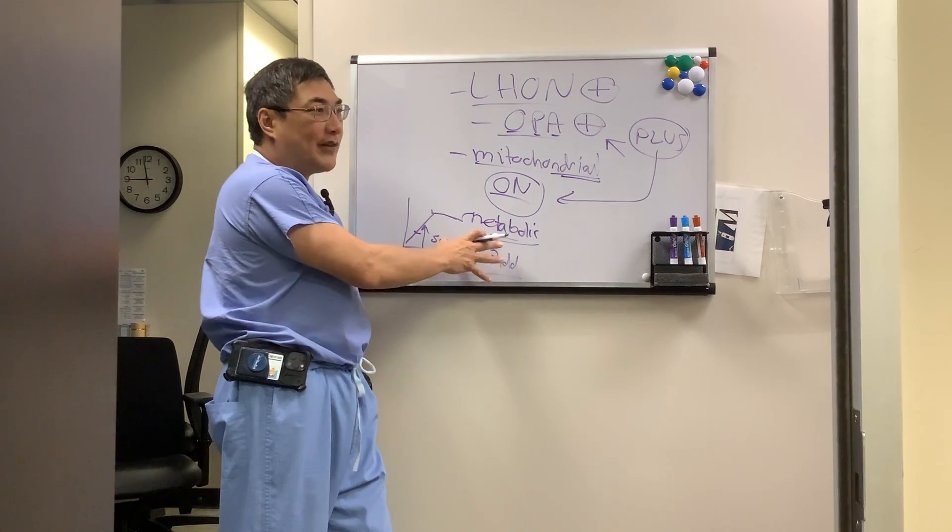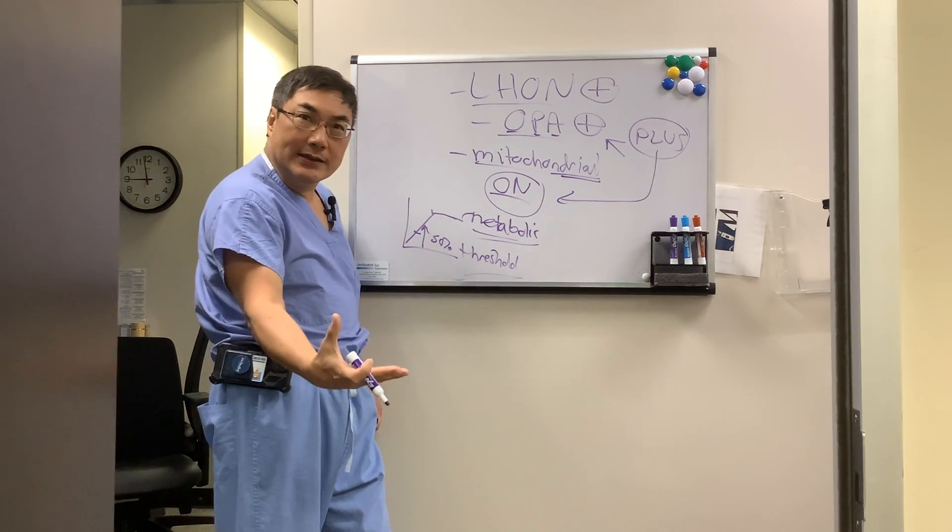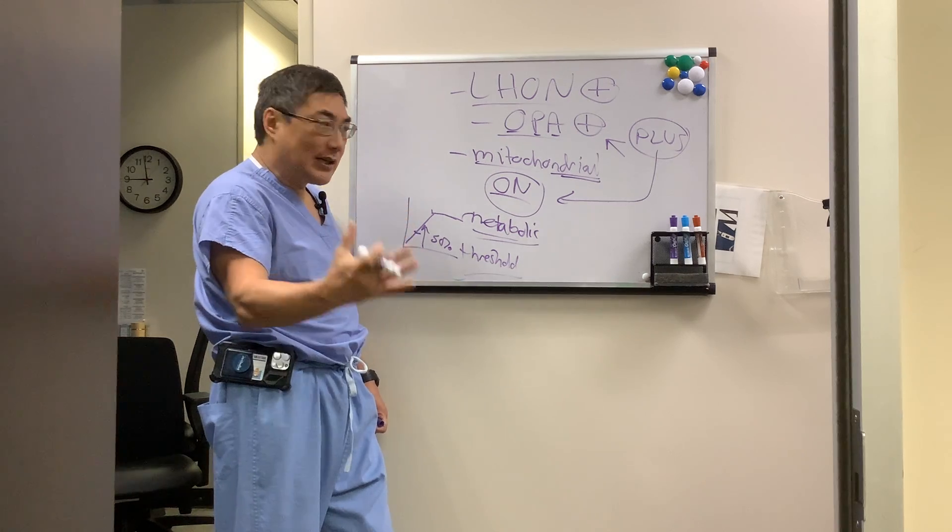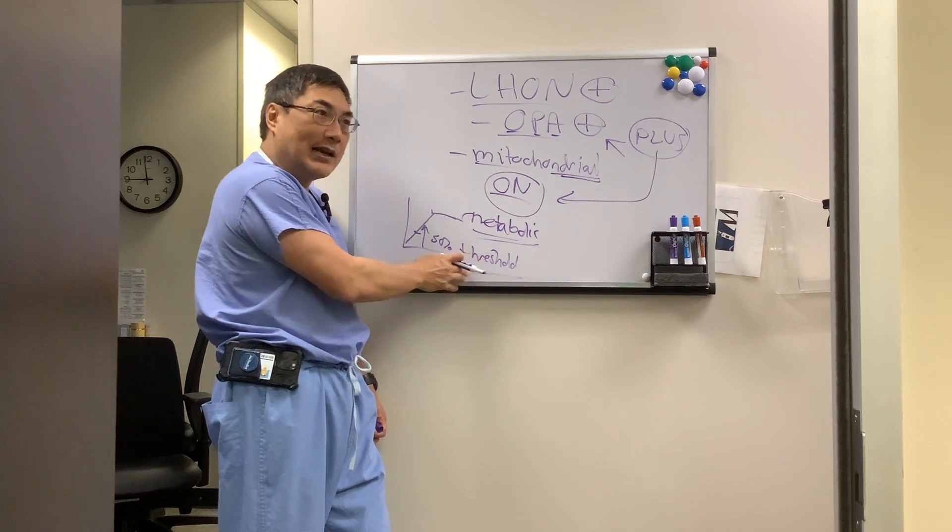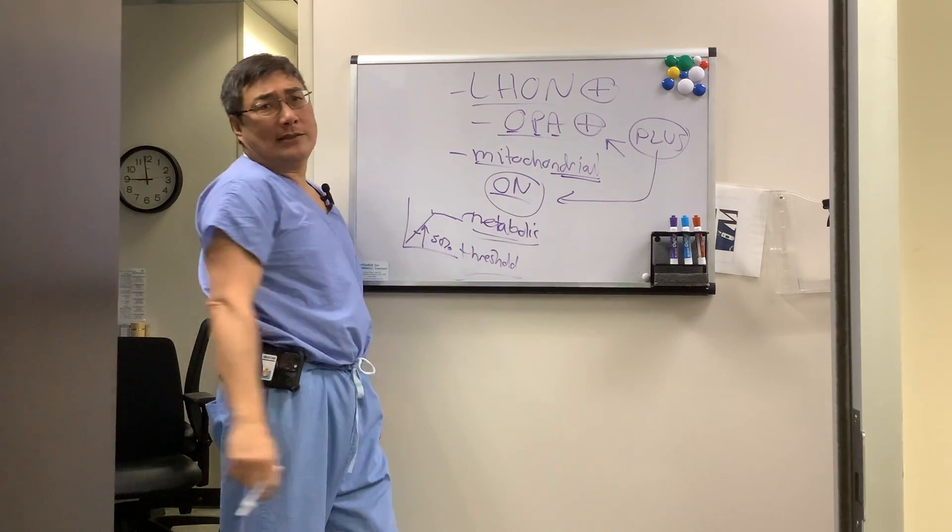That threshold effect accounts for variability in expressivity. The variability in the expression of the gene, even though you have the genotype, is partially dependent on heteroplasmy and a threshold effect of mitochondrial function. And that is plus disease.